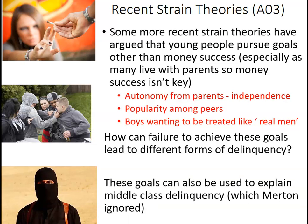What's also interesting about recent strain theories is that they address a problem with Merton - he ignores middle class delinquency. These goals of autonomy, popularity, and masculine identity are not just for working class kids; middle class kids are just as likely to desire them. You might get slightly different deviant responses from middle class compared to working class kids, but deviant or criminal responses nonetheless.